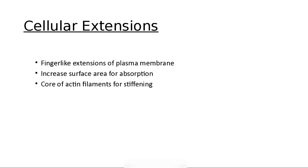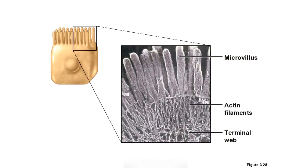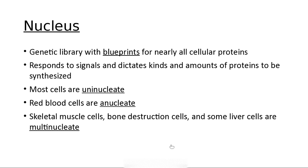Other cellular extensions include villi and microvilli. Here's a little cell with villi, and on top of those you have microvilli, which create a great surface area for absorption. The nucleus is the genetic blueprint for all cellular proteins, carrying the signal to make all the proteins. Every nucleus in every cell of your body theoretically has a code to make all of you.